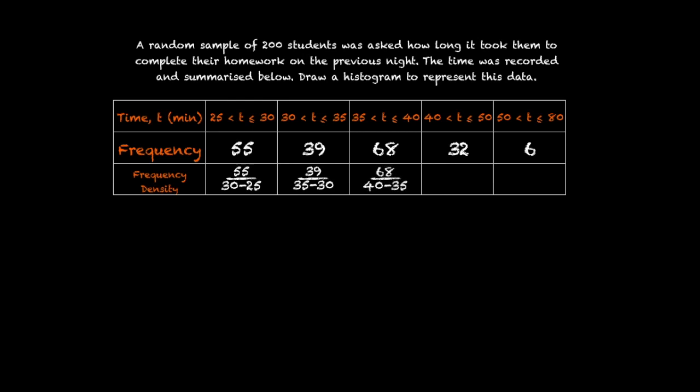However, in the fourth column, the class goes from 40 to 50, which means the class width is now 10. And so the frequency density is 32 over 10. And for the last column, the class width is yet larger again. So our class width now is 30 and our frequency is 6. So the frequency density is 6 over 30.